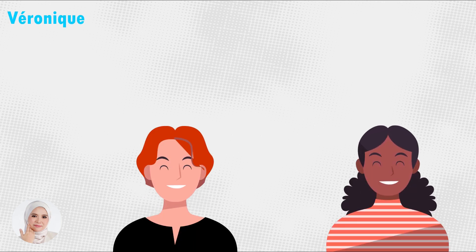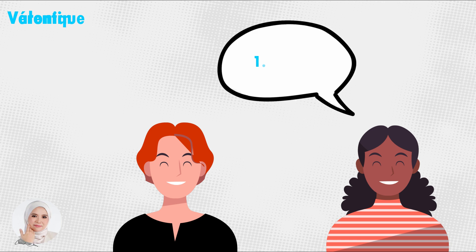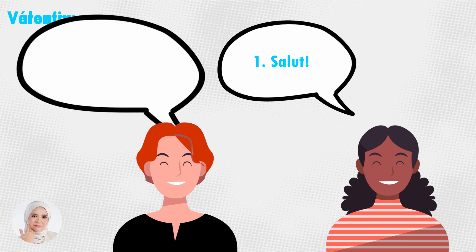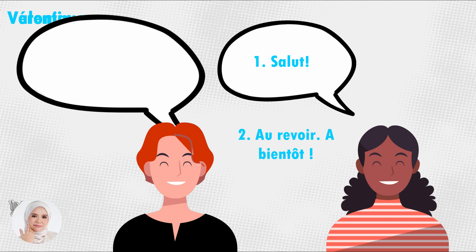The last conversation is between Véronique and Valentinque. Véronique says 'Salut.' Note that 'salut' can be used in two contexts: as 'hi' or 'hello,' and also as 'goodbye.' Valentinque replies 'Au revoir. À bientôt.' 'Au revoir' means 'goodbye,' and 'à bientôt' means 'till we meet again.'